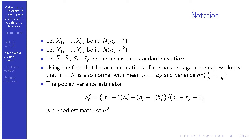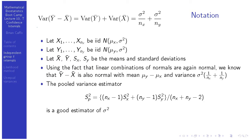We would like to estimate that difference and have a confidence interval to quantify our uncertainty. The obvious estimator of mu_y minus mu_x is y-bar minus x-bar. We need to create a confidence interval of the form estimate plus or minus a t-quantile times a standard deviation. The variance of y-bar minus x-bar works out to be sigma-squared times (1/nx + 1/ny).